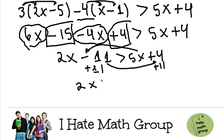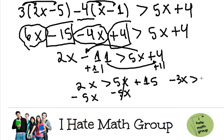So I have 2x greater than 5x plus 15. Finally, I'll do negative 5x on both sides. Then 2x minus 5x is negative 3x, greater than 15.